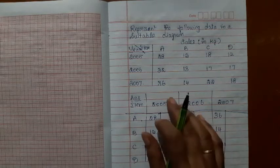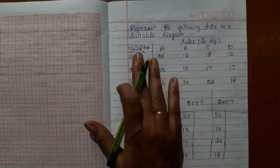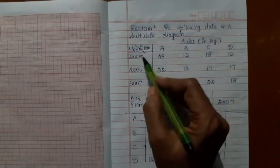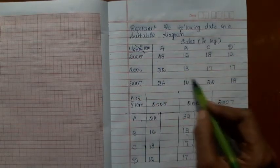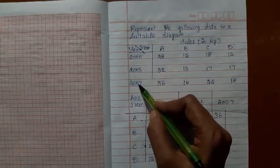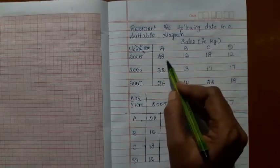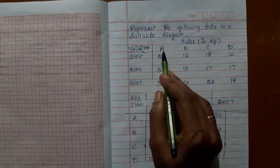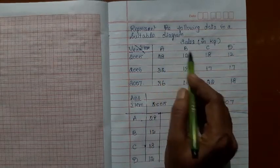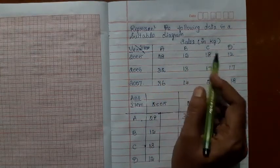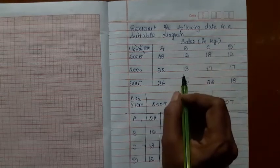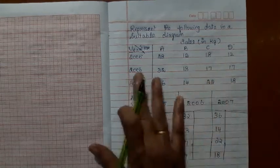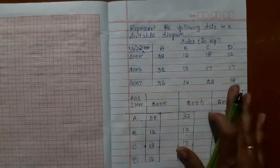Let's consider this data. The sales data is given with year-wise classification and item-wise classification. In 2005, 28 kg of A, 12 kg of B, 18 kg of C, and 12 kg of D were sold. Similarly, for the year 2006 and 2007.